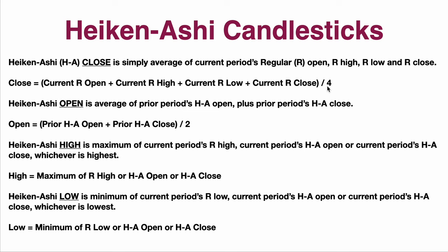That means that the close for the period that you are using — we'll say a day — the close for that day is the average of all the prices throughout that day: the open, the high, the low, and the close for that day. Think about that. So it's showing you, when you go to the close, what the average of everything that happened that day was. That's important to understand and to keep in mind.